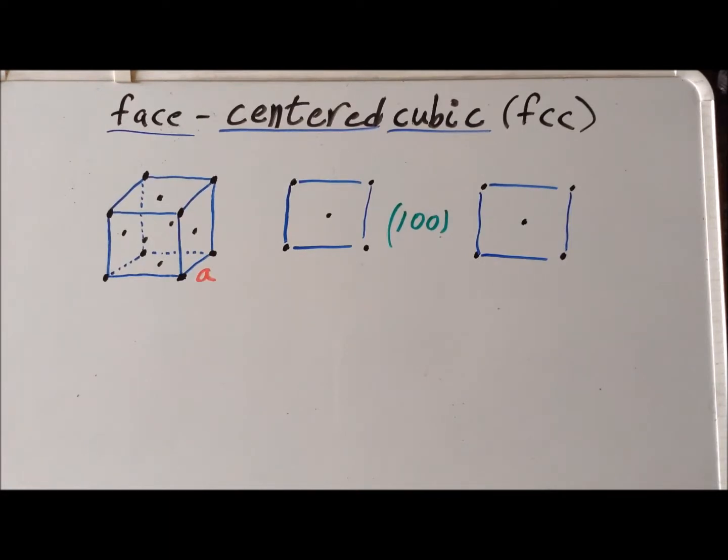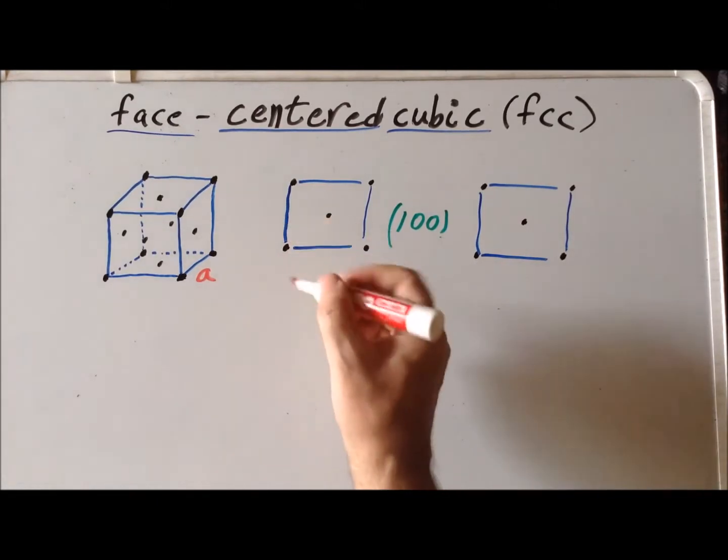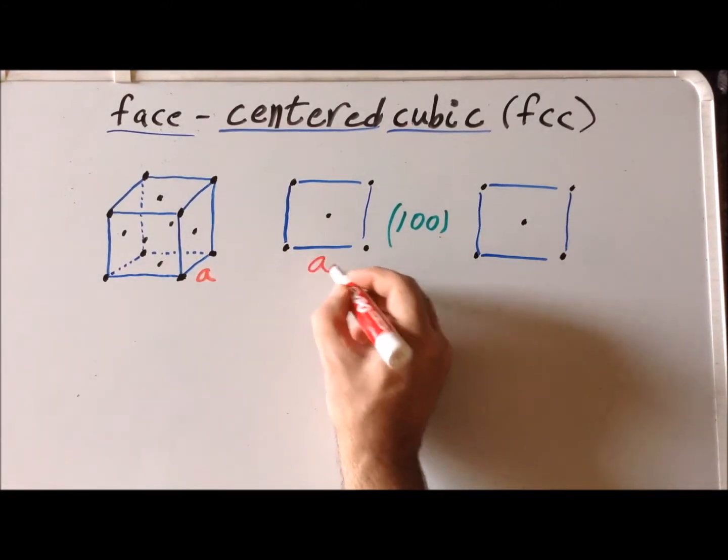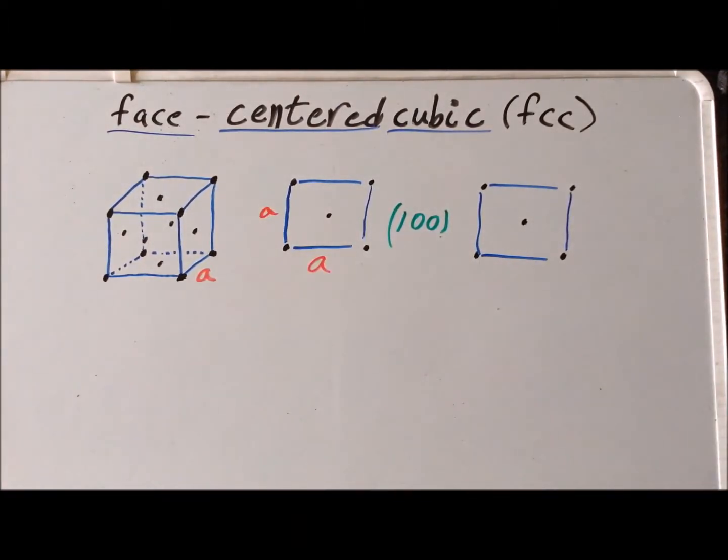If we cut through the crystal parallel, for example, to the top face here, parallel to the top square here, we get the 1, 0, 0 face of the crystal, and we notice that we have a square structure in the sense that both the height and the width are a distance a, so that we have a square here.